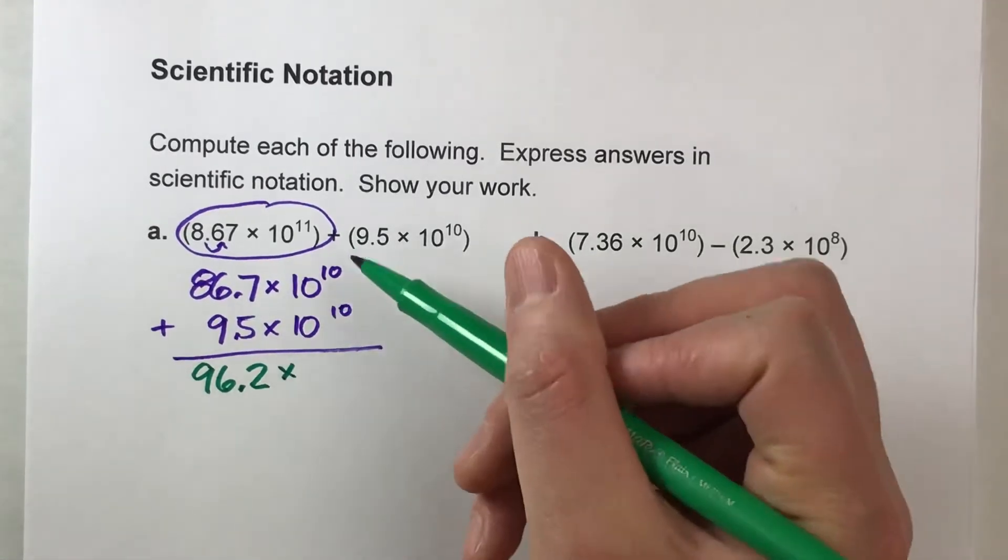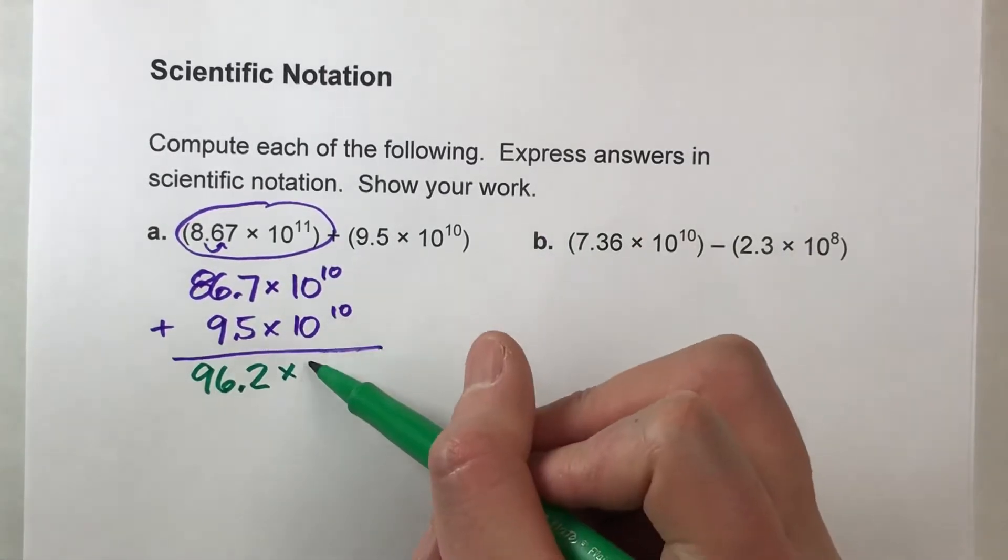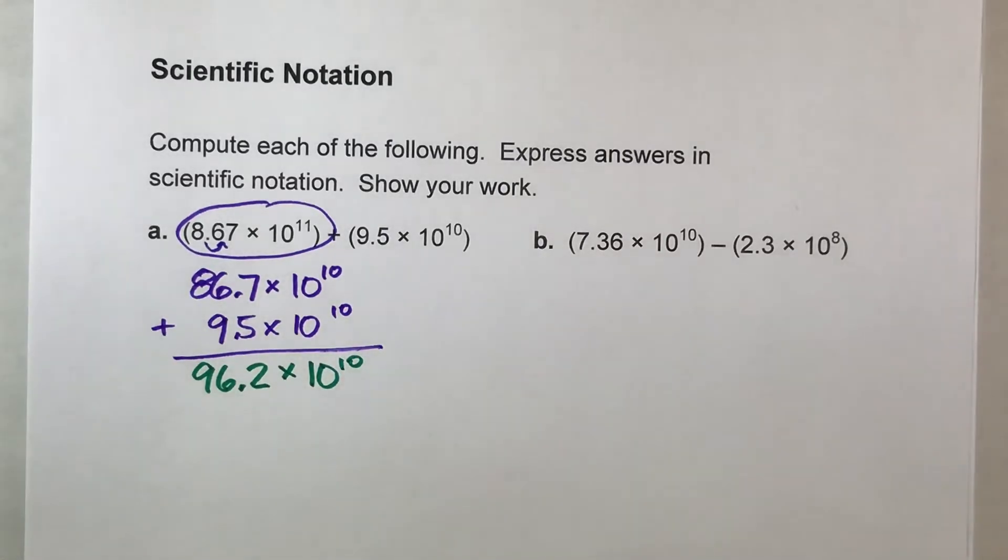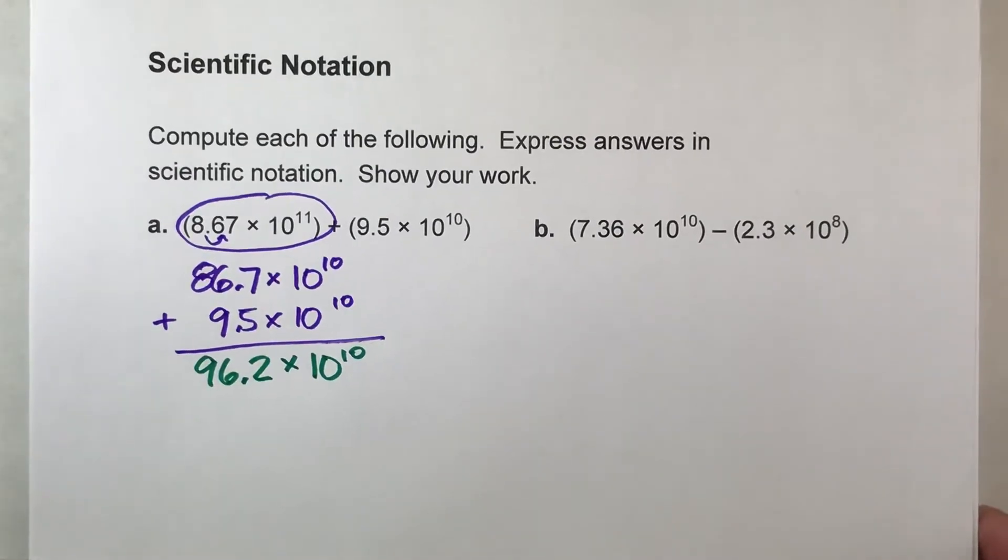But the power of 10 is not going to change. And the reason why it's not going to change is it's a placeholder for the decimal. And when you add them together, the decimal place is not going to move. Everything is going to stay lined up in columns. You have to imagine adding decimals together.